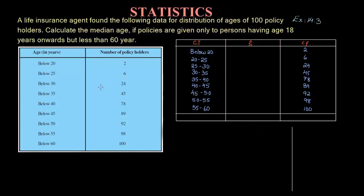The second column in the question talks about frequency. Whenever the question given to you is in 'below than' or 'less than' format, the frequency will always be the cumulative frequency. What is cumulative frequency? It is the frequency after adding all the frequencies before it.